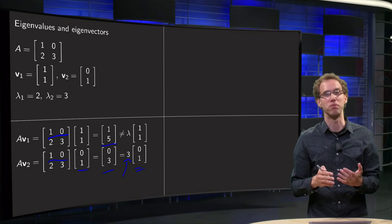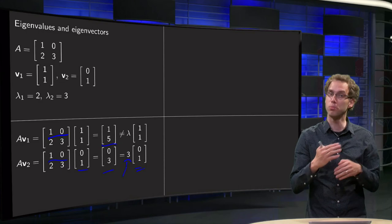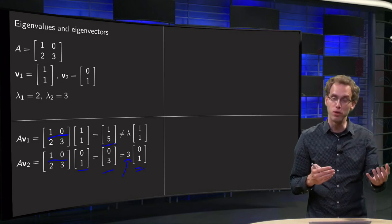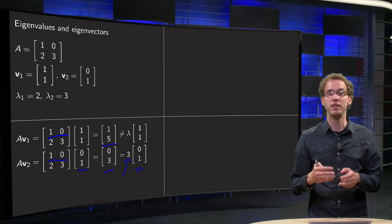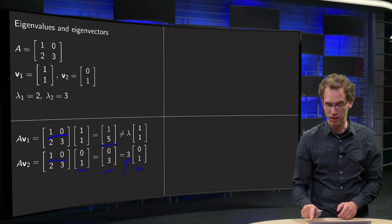So if you have some vector, you can always find easily whether it's an eigenvector or not, just compute A times v. If it's a multiple of v, then you're fine, you have an eigenvector, and if it's not a multiple of v, then it's not an eigenvector.